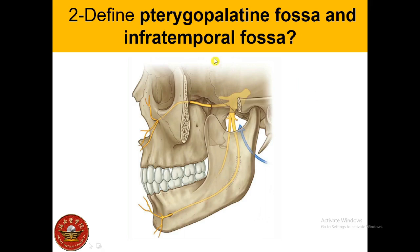The pterygopalatine fossa — the name represents the pterygoid plate, which belongs to the sphenoid bone, and the palatine bone. This fossa on each side is just posterior to the upper jaw. This small fossa communicates with the cranial cavity, the infratemporal fossa, the orbit, the nasal cavity, and the oral cavity. The important structure passing through it is the maxillary division of the trigeminal nerve.